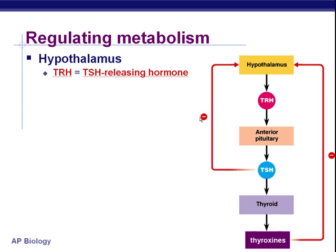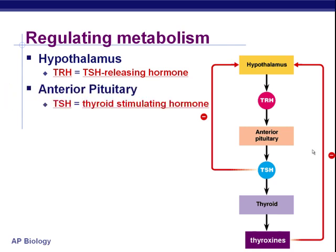The hypothalamus is going to secrete releasing hormones that affect the pituitary gland. The pituitary gland receives this signal from the hypothalamus — it's getting this releasing hormone — so it has to release TSH. TSH is thyroid stimulating hormone. TSH releasing hormone causes the anterior pituitary to release TSH, which further stimulates the thyroid.